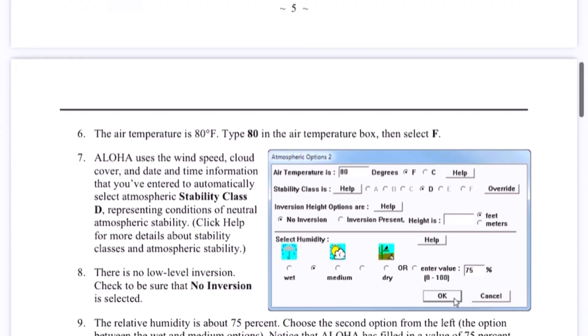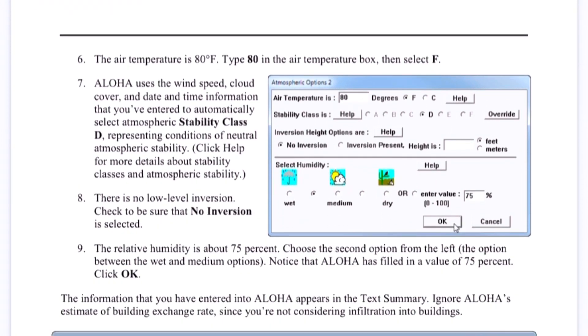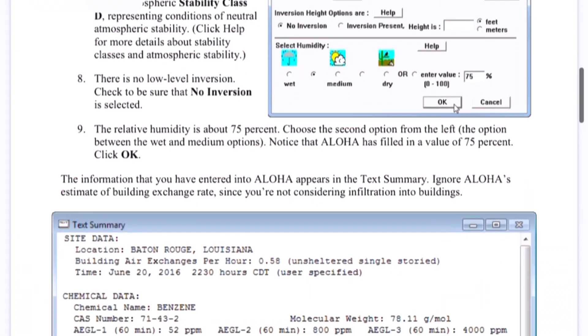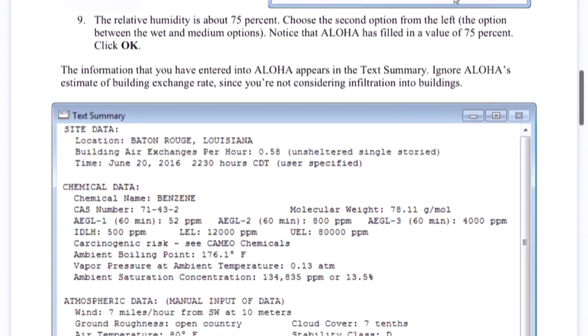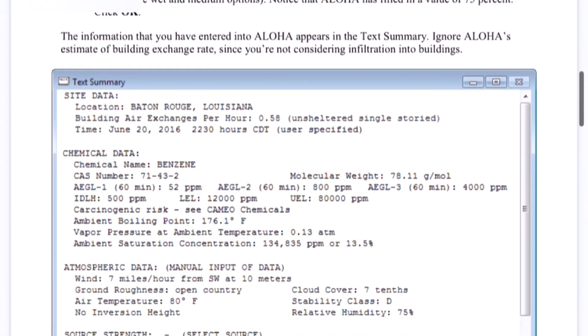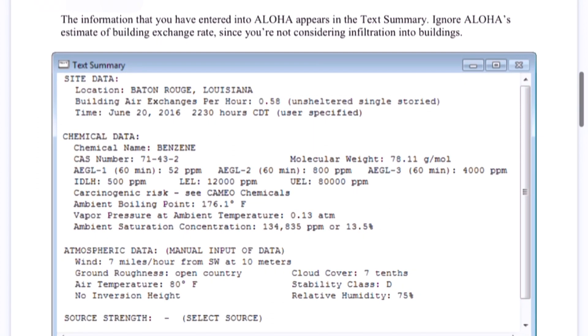After selecting this, then we will come down. Then here we have to put humidity, air temperature, stability class. Then this text summary will appear on your screen, which I'm scrolling down just to make you understand more in detail.